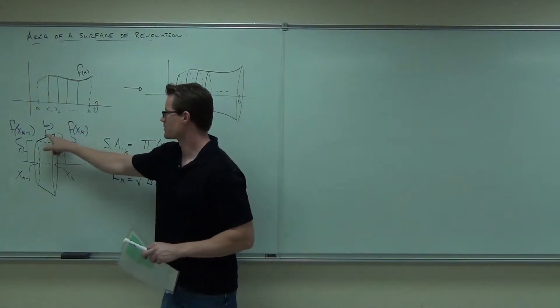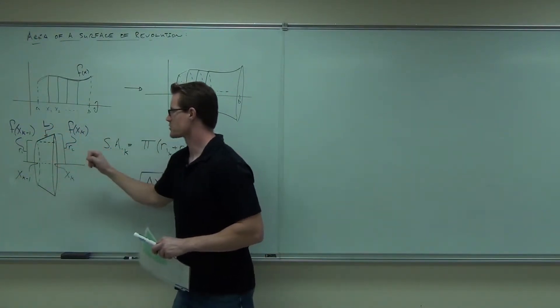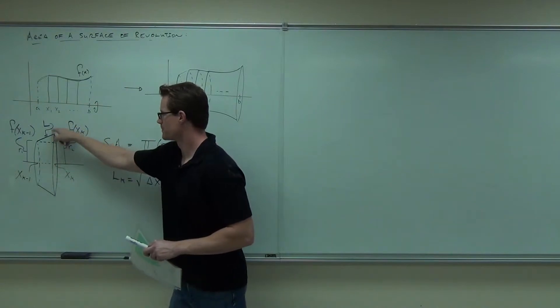So Pythagorean theorem, leg squared plus leg squared is hypotenuse squared. And that's the L.